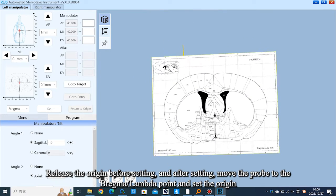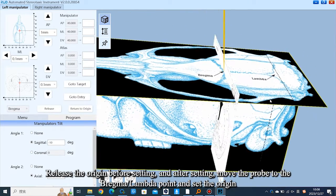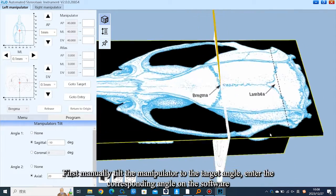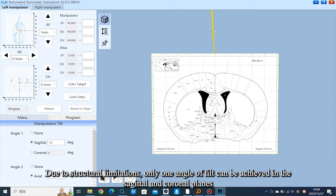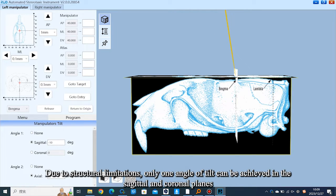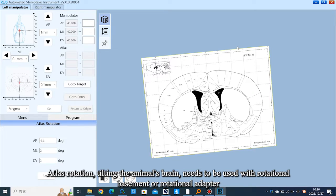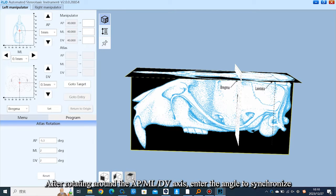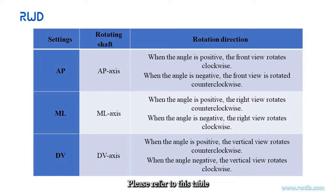Release the origin before setting the tilt angle. After setting, move the probe to the bregma or lambda point and set the origin. First manually tilt the manipulator to the target angle, then enter the corresponding angle in the software. Due to structural limitations, only one angle of tilt can be achieved in the sagittal and coronal planes. For ATLAS rotation — tilting the animal's brain — this needs to be used with a rotational base or rotational adapter. After rotating around the AP, ML, or DV axis, enter the angle to synchronize. Please refer to the corresponding table.